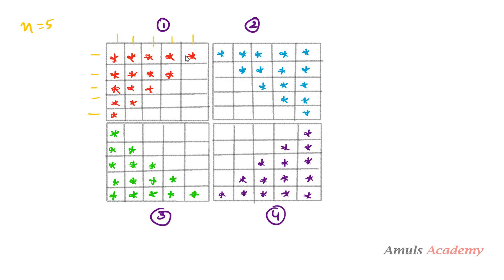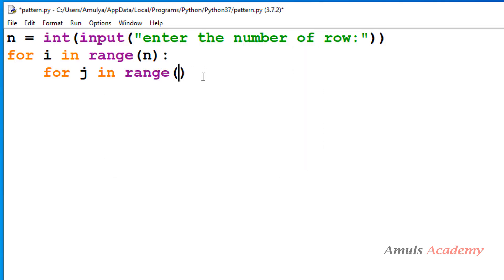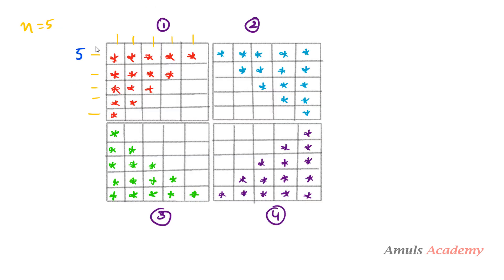In the first row we want 5 columns, second row 4 columns, third row 3 columns, fourth row 2 columns, and the last row 1 column — columns in descending order. So I will take the range in reverse: if n is 5, range will be from 5 to 0 with step -1, giving row numbers 5, 4, 3, 2, 1. This row number helps us print the correct number of stars per row.